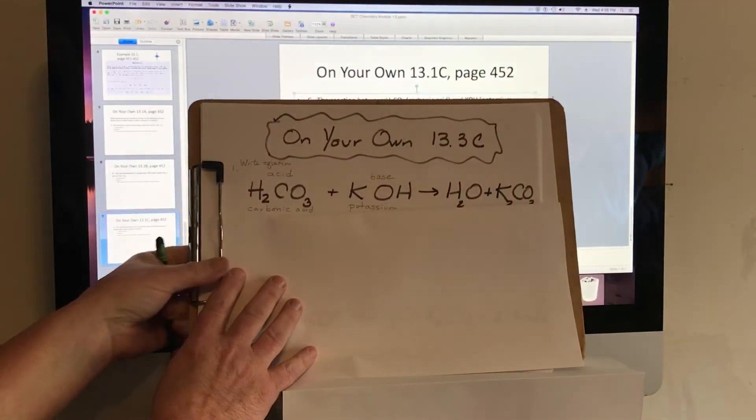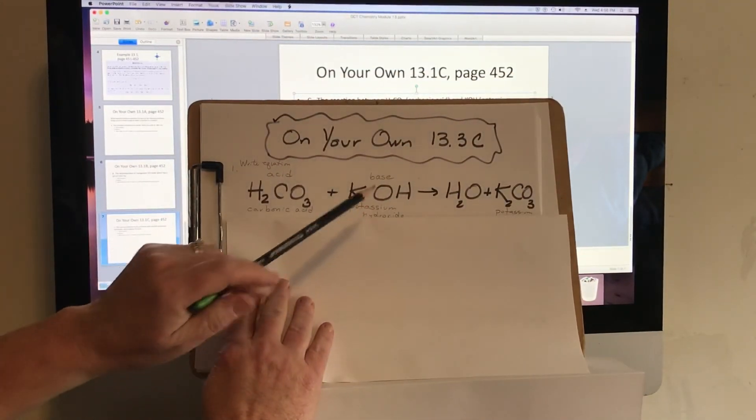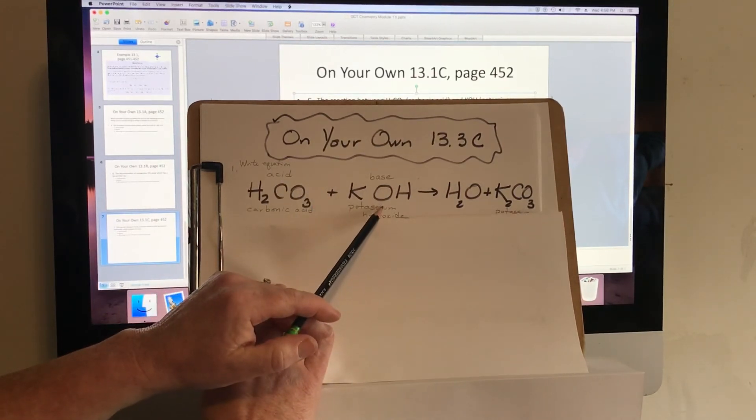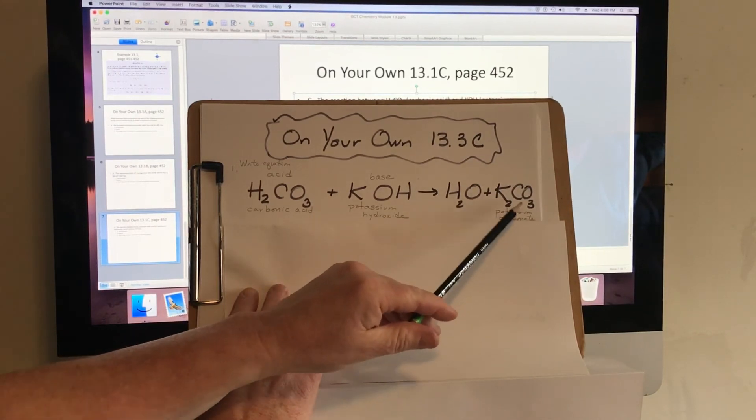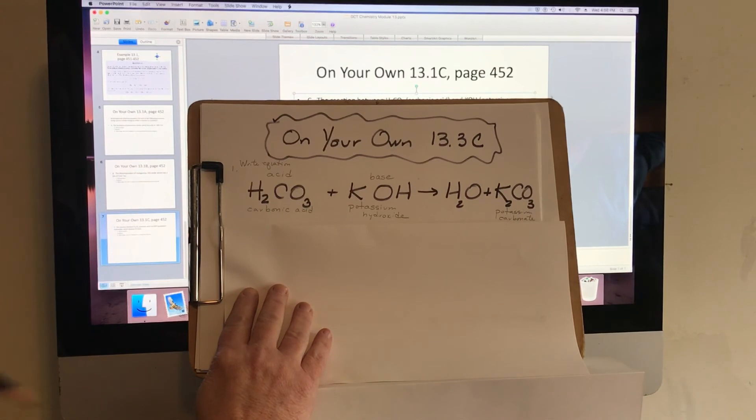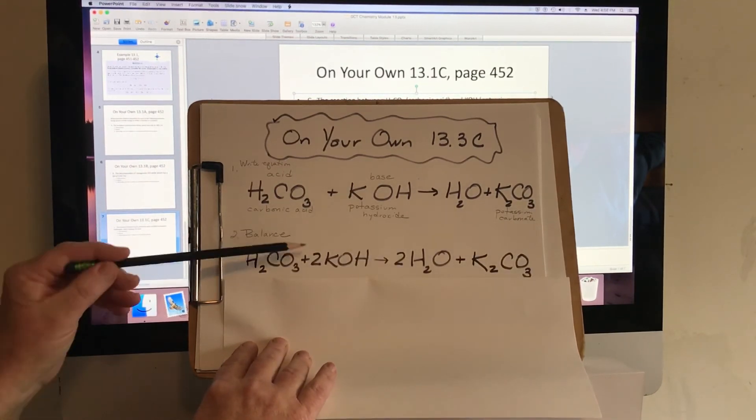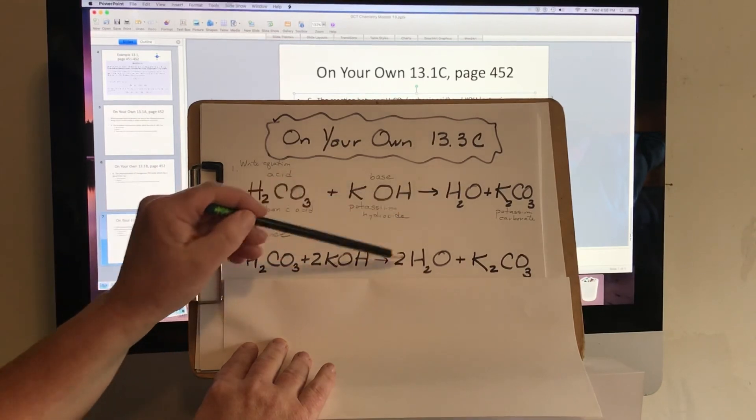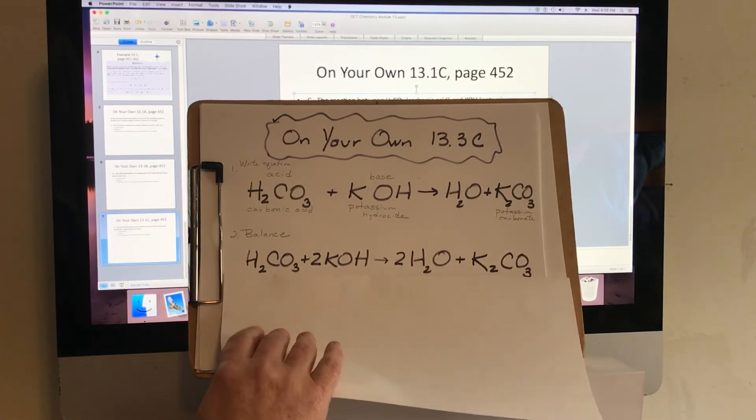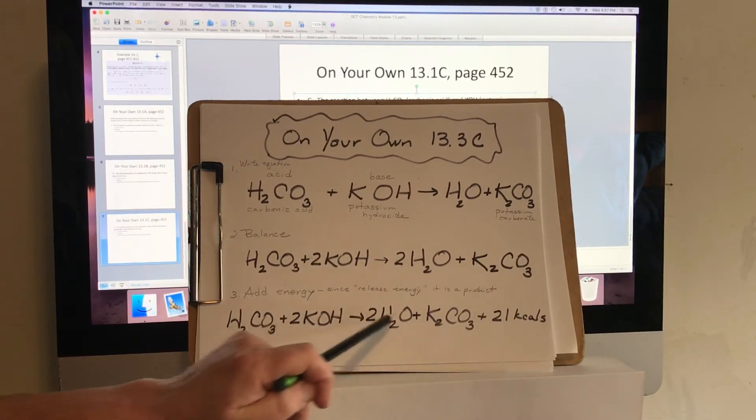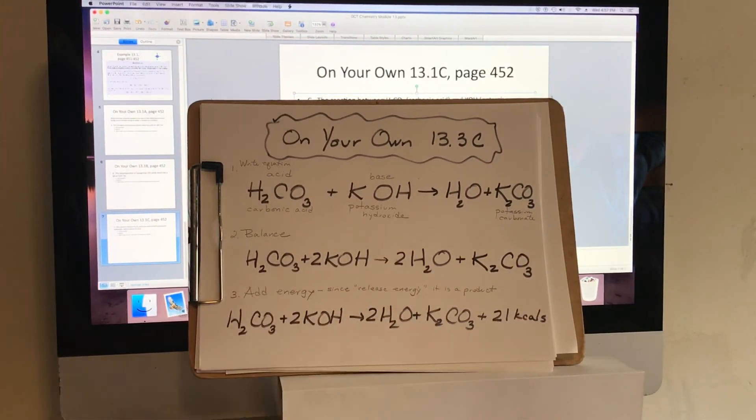So let's look at this. This is our equation. We have the carbonic acid, which is obviously an acid, the base, the potassium hydroxide. It yields water, H2O, and potassium carbonate. Now we're going to need to balance it. We can add a two here and a two here. And we balanced it now. Then it says we have to add our energy. Again, since we said it was released, it's going to be added as a product. So it's the same equation as above, but we're adding the 21 kilocalories.